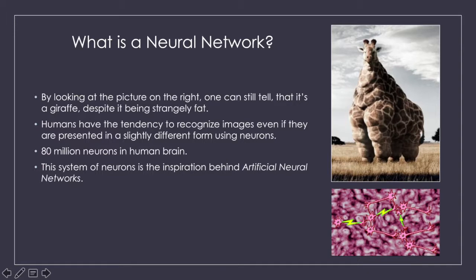What is a neural network? If you look at the picture, you should be able to tell that it is a giraffe, despite it being strangely fat. We recognize images and objects instantly, even if these images are presented in a form that is different from what we have seen before. We do this with the 80 billion neurons in our brain working together to transmit information.